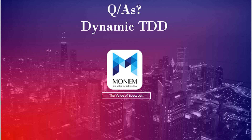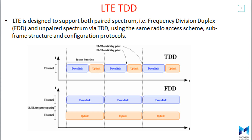Hello everyone, welcome to the second video of the question and answers stream. Today we will talk about Dynamic TDD. In LTE, two spectrum methods can be supported: LTE is designed to support both paired spectrum or FDD (Frequency Division Duplex), or unpaired spectrum by TDD (Time Division Duplex).